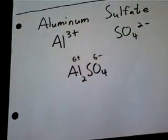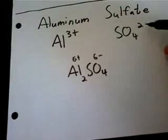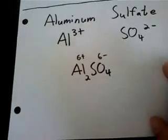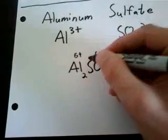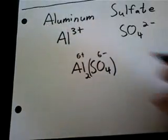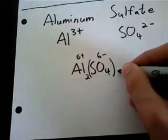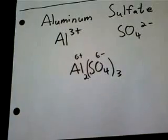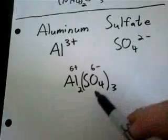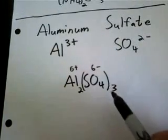And for the sulfate ion, we have 2-, so what do we have to multiply 2 by to get -6? 3, right? 2 times 3 is -6. So I'm going to put this in parentheses and give it a subscript 3. And that is our formula for aluminum sulfate, Al2(SO4)3.